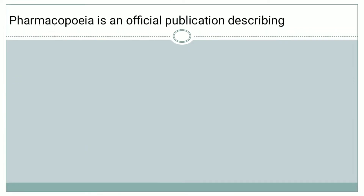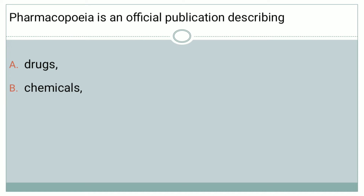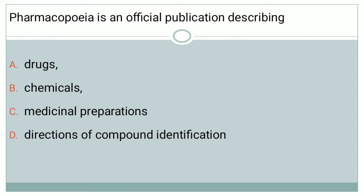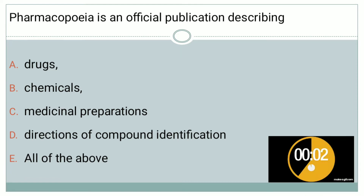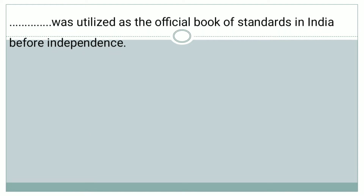The first question is: Pharmacopeia is an official publication describing — Option A: Drugs, Option B: Chemicals, Option C: Medicinal Preparations, Option D: Directions of Compound Identification, Option E: All of the above. The right answer of this question is Option E, that is all of the above.